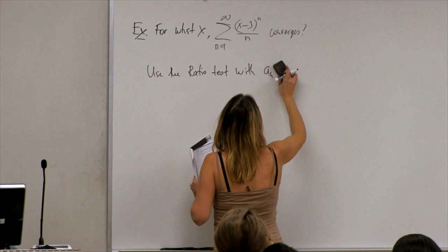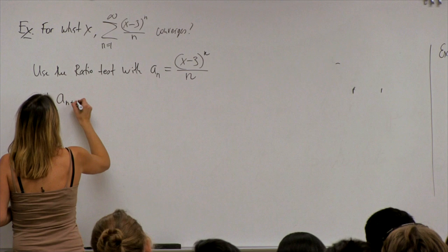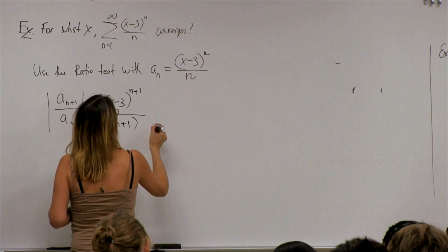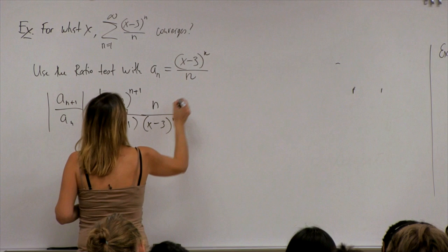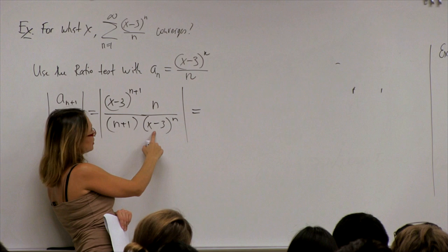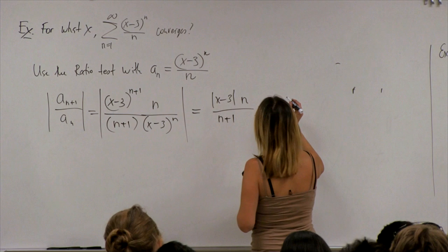We have aₙ given by the general term (x−3)^n / n. So aₙ₊₁/aₙ equals (x−3)^(n+1)/(n+1) divided by (x−3)^n/n, which simplifies. The (x−3)^n terms cancel, leaving |x−3| · n/(n+1), which can be written as |x−3| / (1 + 1/n).